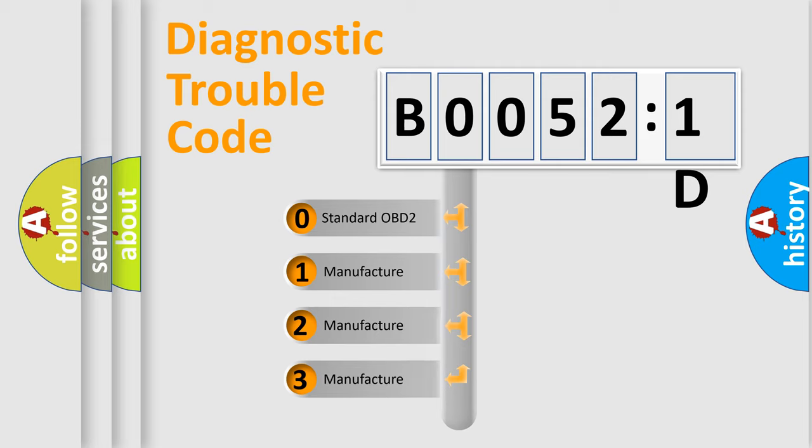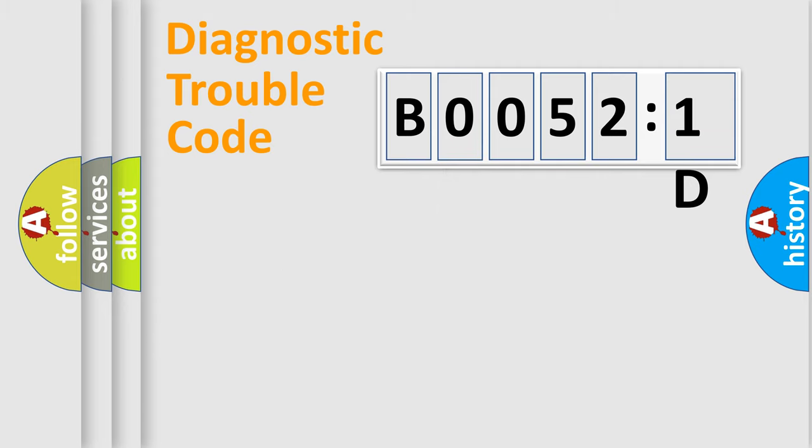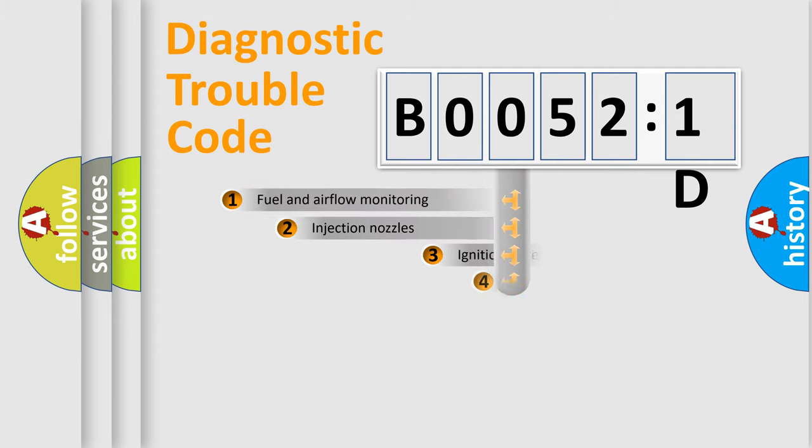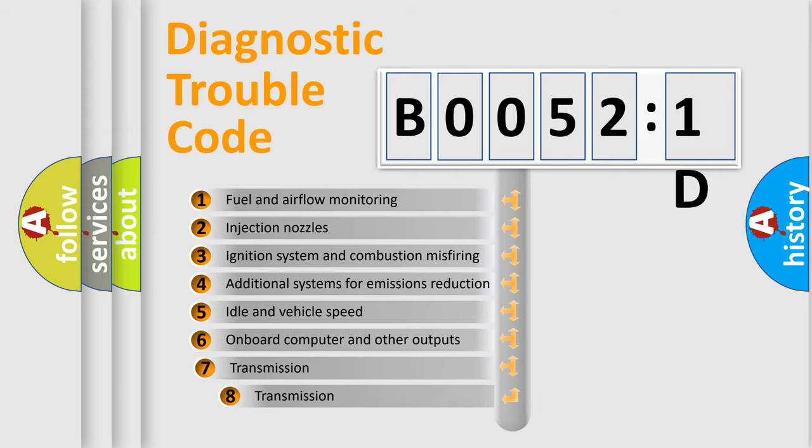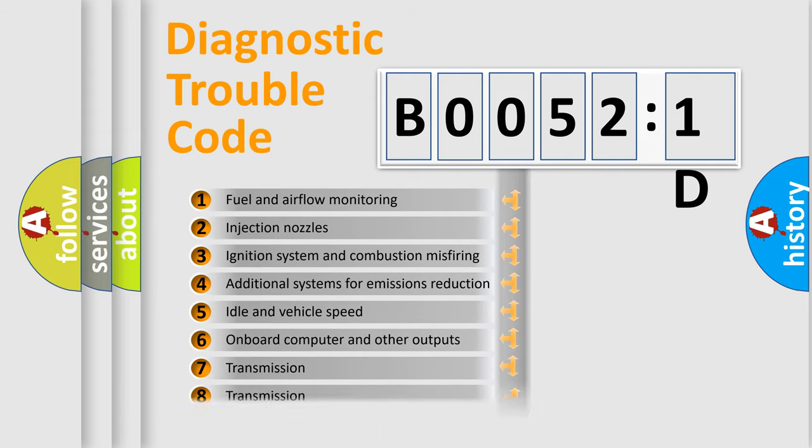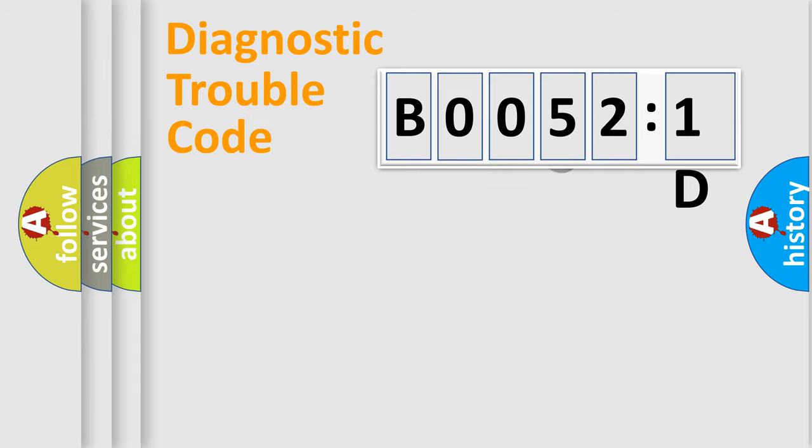If the second character is expressed as zero, it is a standardized error. In the case of numbers 1, 2, 3, it is a more prestigious expression of the car-specific error. The third character specifies a subset of errors. The distribution shown is valid only for the standardized DTC code. Only the last two characters define the specific fault of the group.